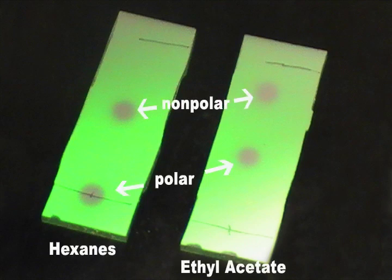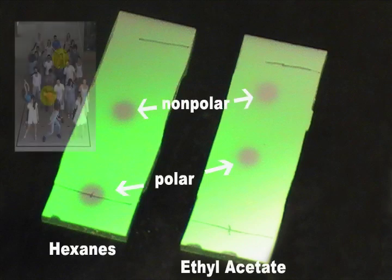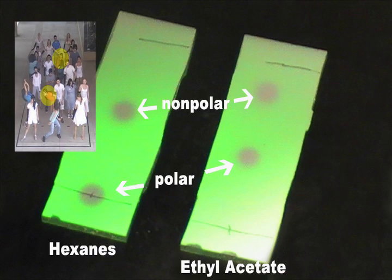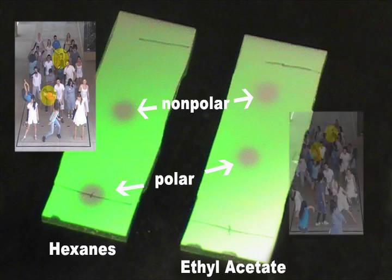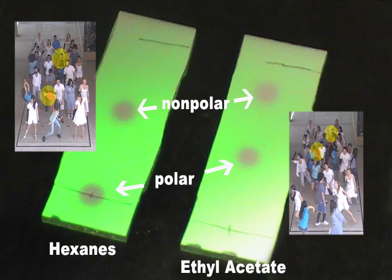As you can see on the plate, when using non-polar hexanes as a solvent, both compounds have a smaller RF compared to when we use polar ethyl acetate as a solvent.